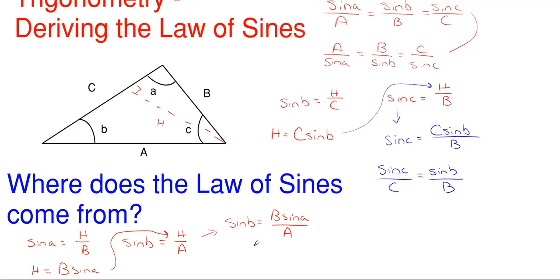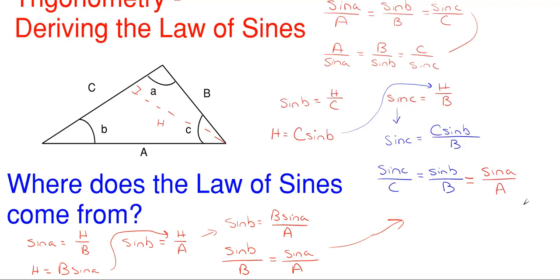Just like before, let's move B over to angle B, so we have the sine of angle B over side B is equal to the sine of angle A over side A. We already have sine of C over C equals sine of B over B, and now sine of B over B equals sine of A over A. So we can tack on this portion: sine of A over A is equal to sine of B over B, which is equal to sine of C over C. And that is the law of sines — that's how you derive it and where it comes from. You just split a triangle into two right triangles, find the sine of each angle, and repeat the process for the other side.